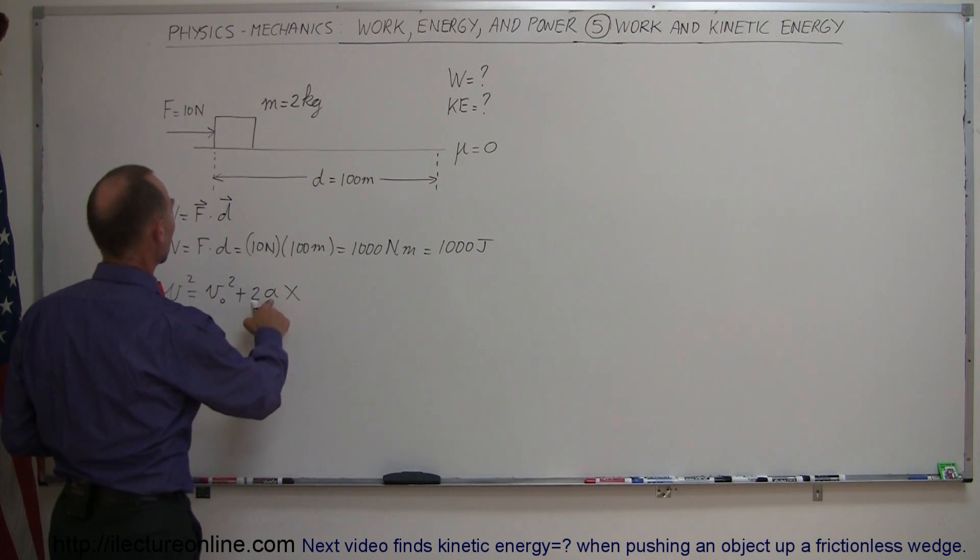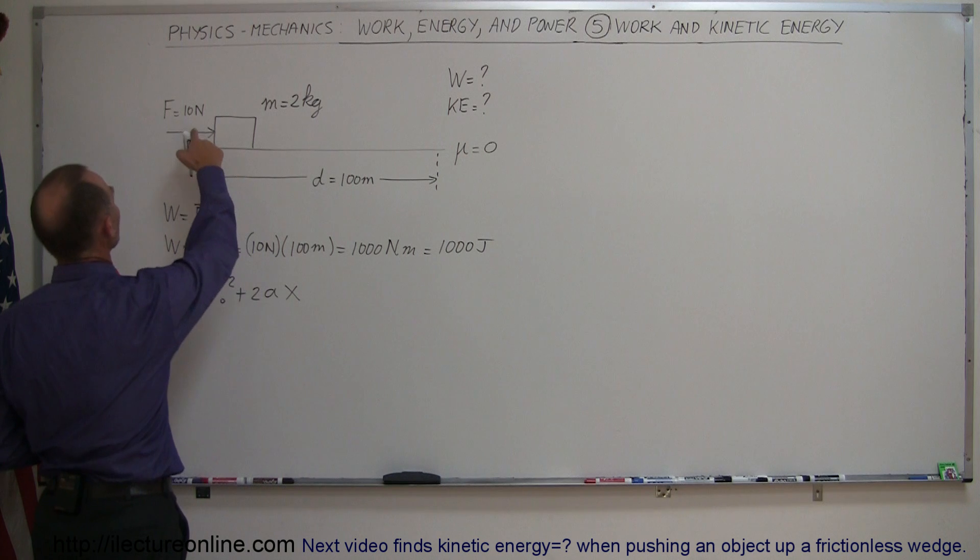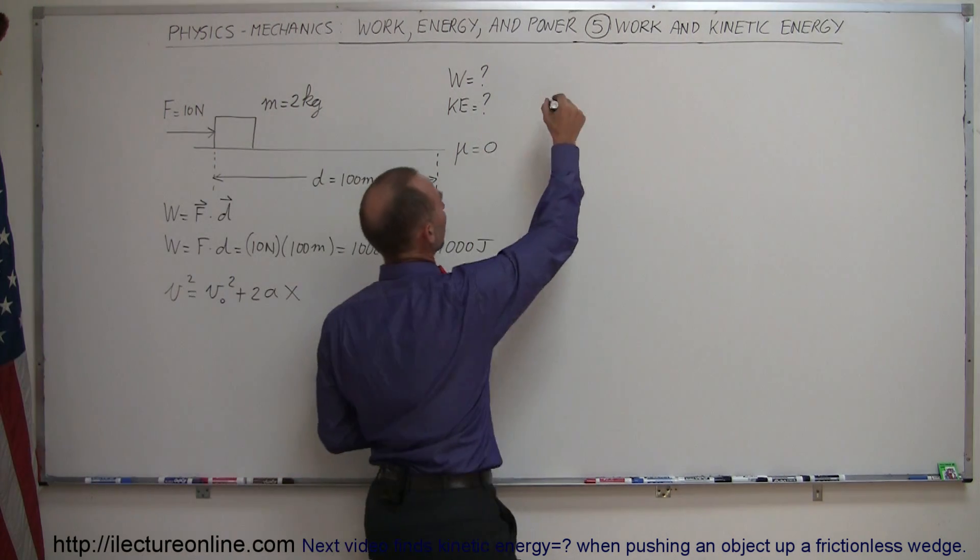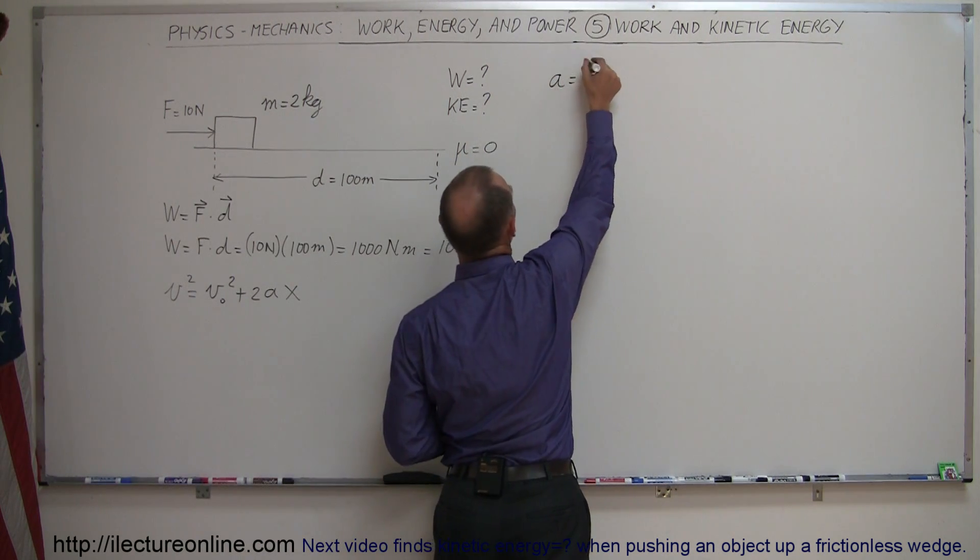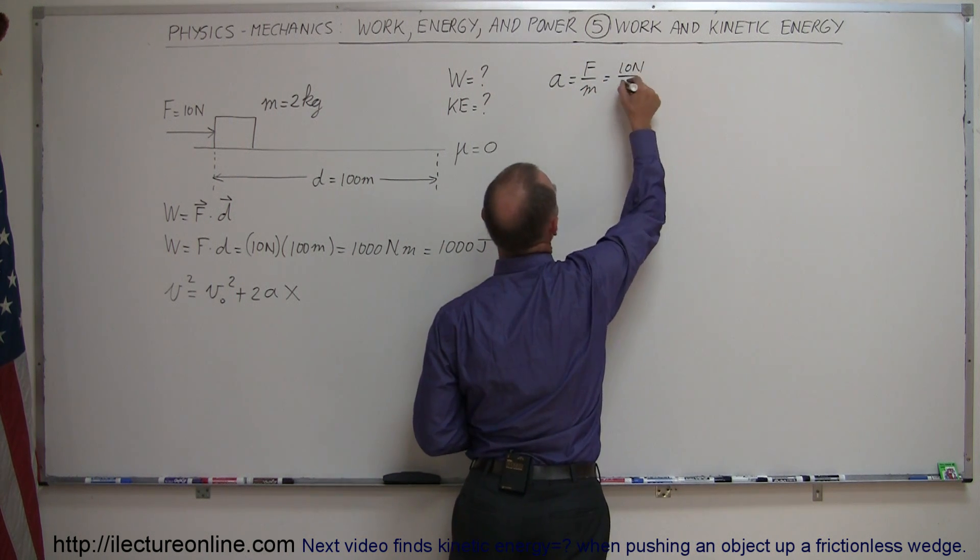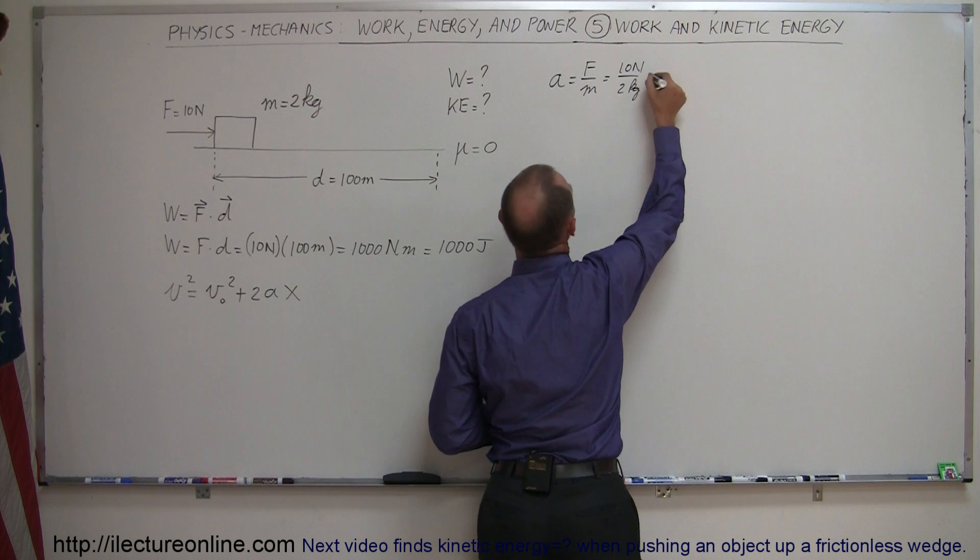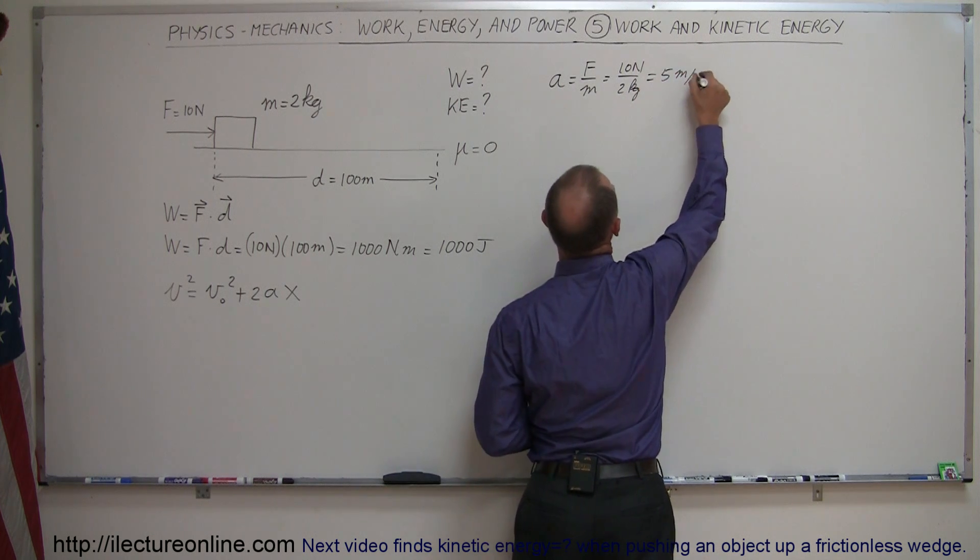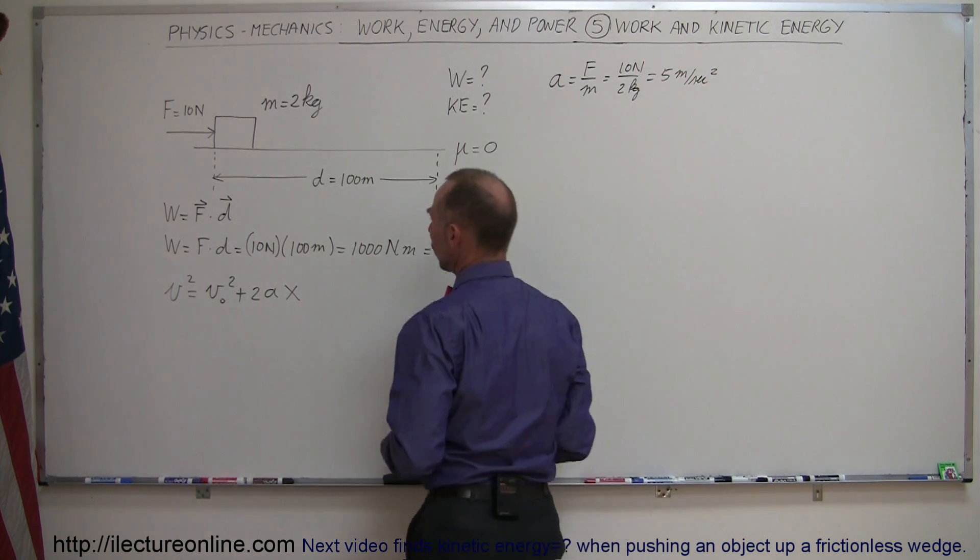So, the acceleration can be found by knowing the force and the mass. Using Newton's second law, we can say acceleration is equal to the ratio of the force divided by the mass, which is equal to 10 newtons divided by 2 kilograms, which is going to be 5 meters per second squared. So, we also know the acceleration.